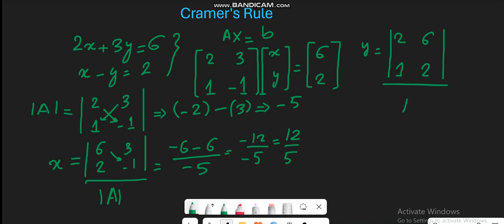And then we will again divide it with the determinant of A. So here you will see y is equal to 2 into 2 is 4, minus 6 into 1 is 6, divided by minus 5. So you will have minus 2 over 5, and minus minus signs will be cancelled out, and y will be equal to 2 over 5.